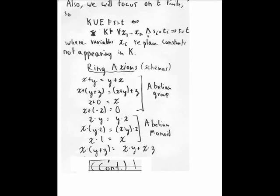So the first few ring axioms belong to an abelian group. We have to have the addition be associative, the addition be commutative, the addition be associative, adding zero just gives you X. We have to have inverses, and we also have abelian monoid properties.